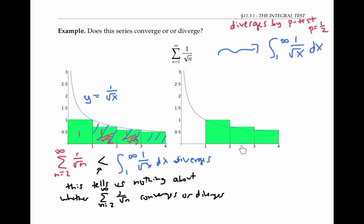In this second picture, I've used left endpoints instead of right endpoints for the heights of my rectangles. Because my function y equals one over the square root of x is a decreasing function, using left endpoints makes my rectangles have a larger area than the area under the corresponding section of the curve. Let me label the rectangles with their areas. The areas of these rectangles correspond to the terms in my series.